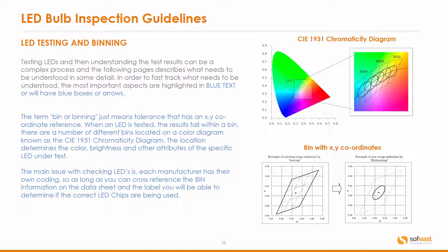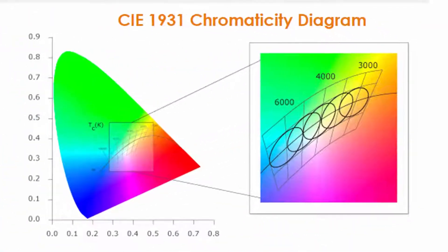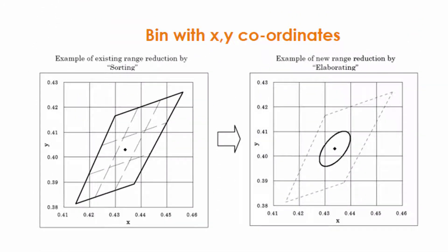When the LED is tested, the results fall within a bin. There are a number of different bins located on a color diagram known as the CIE 1931 chromaticity diagram, which is the color diagram we saw to start with. The location determines the color, brightness, and other attributes of the specific LED under test. The main issue with checking LEDs is that each manufacturer has their own coding, so as long as you can cross-reference the bin information on the data sheet and the label, you will be able to determine if the correct LED chips are being used. On the top right-hand side you can see that chromaticity diagram with a number of squares and circles arranged on it, and at the bottom we have those bins with the XY coordinates, which we'll cover in detail in the next few slides.